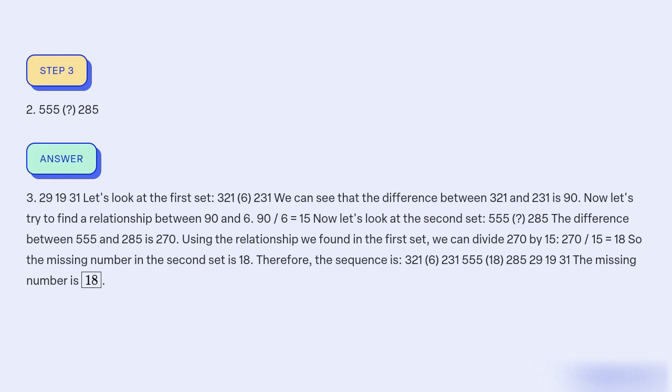Therefore, the complete sequence is 321, 6, 231, 555, 18, 285, 29, 19, 31. The missing number is 18.